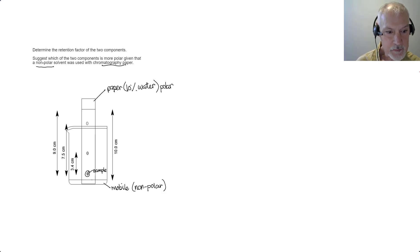As our mobile phase moved through our sample, it moved its way up and broke it into two particular parts. We'll call it component A up here and B down here.